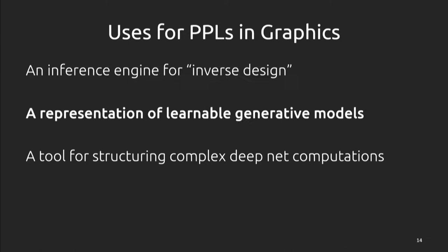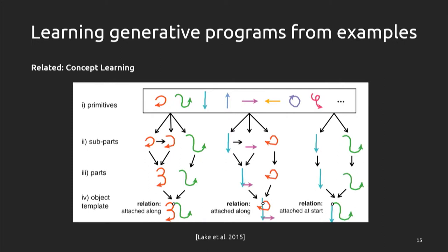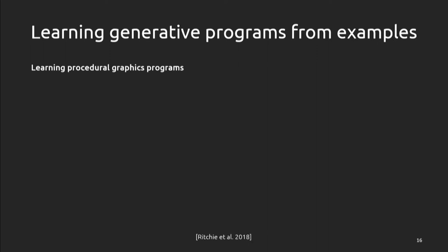This brings me to the second point: PPLs as a representation of learnable generative models. Programs in their forward generative structure encode the intent we'd like to capture — strongly related to concept learning from cognitive science. This relates to Brendan Lake's recent science paper on learning probabilistic programs describing hand-drawn characters, taking motion primitives like little strokes, combining them into parts, which combine into higher-level objects — a hierarchical probabilistic generative process.